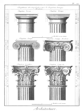Mihrab: in Islamic architecture, a semi-circular niche in the wall of a mosque that indicates the direction of prayer.